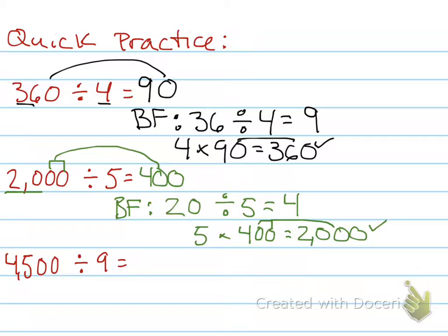Last quick practice here. Four thousand five hundred divided by nine. Basic fact. Forty-five divided by nine. Nine times what gives me 45? Five.